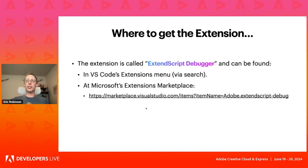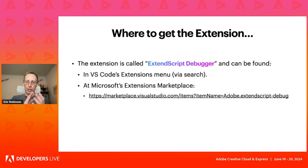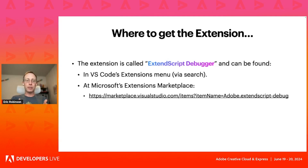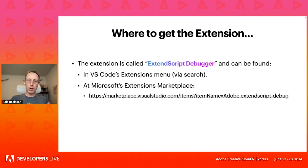Where to get the extension: it's called the ExtendScript Debugger and can be found in two places. One is the Extensions menu in VS Code — just search for 'ExtendScript Debugger' and it should show up. It's also available at Microsoft's extensions marketplace, at the link below. You can also Google for 'ExtendScript Debugger extension' and it should show up in your favorite search engine.